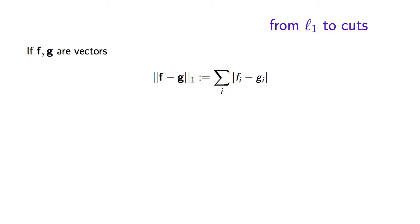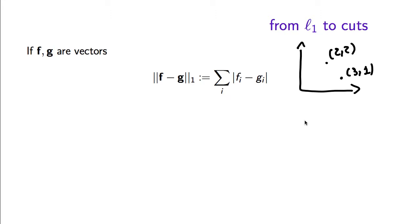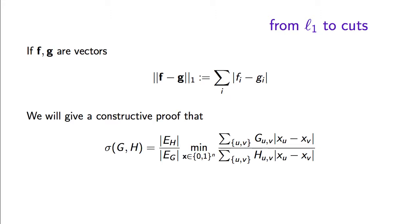First, let me remind you of the definition of the L1 norm. If we have two vectors, the L1 distance between f and g is the summation over the coordinates of the absolute difference of the vectors in those coordinates. For example, the vectors (3, 1) and (2, 2) have L1 distance 2, because the difference in the y-coordinates is 1 and the difference in the x-coordinates is 1. The sparsity of a sparsest cut instance G, H is, up to a normalizing factor, the minimum over all cuts — which can equivalently be represented as Boolean vectors — of the number of G edges crossing the cut divided by the number of H edges crossing the cut.